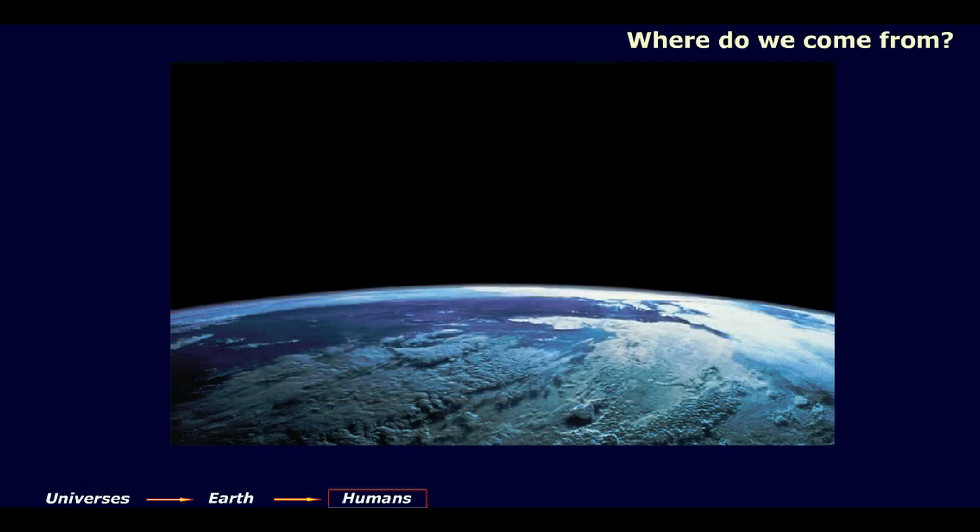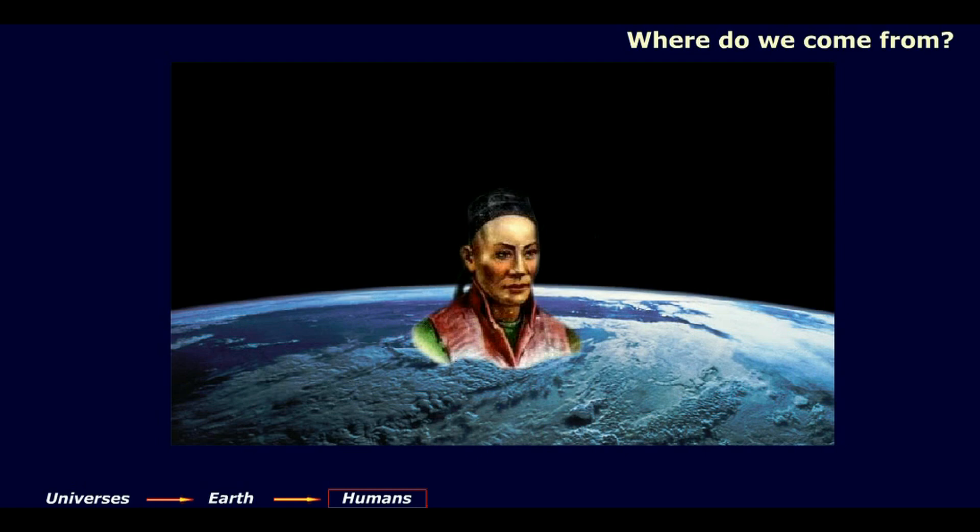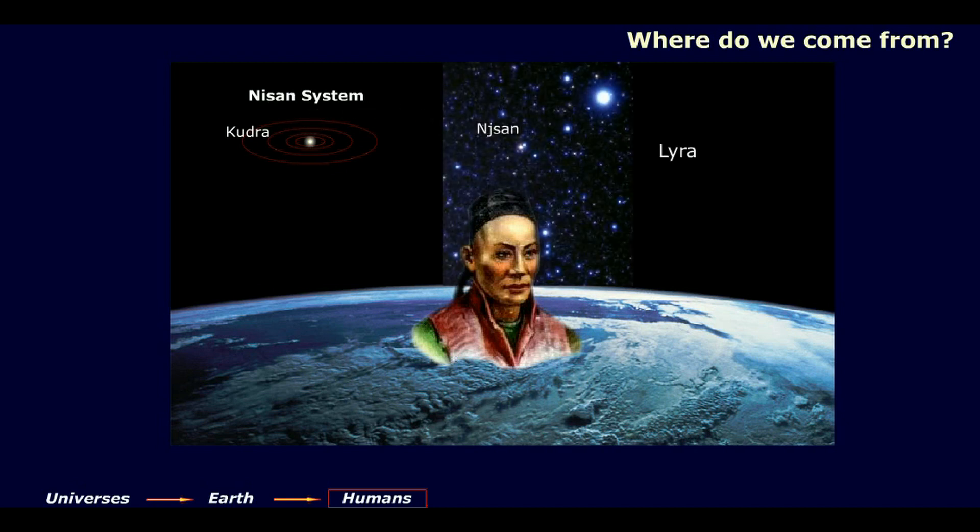The Chinese and Japanese races are the youngest inhabitants of our planet Earth. They are originally from the planet Kudra of the Nissan star system, but they emigrated to planet Nizan of the Lyra star system two and a half million years ago, and then 26,000 years ago some of them emigrated to Earth.